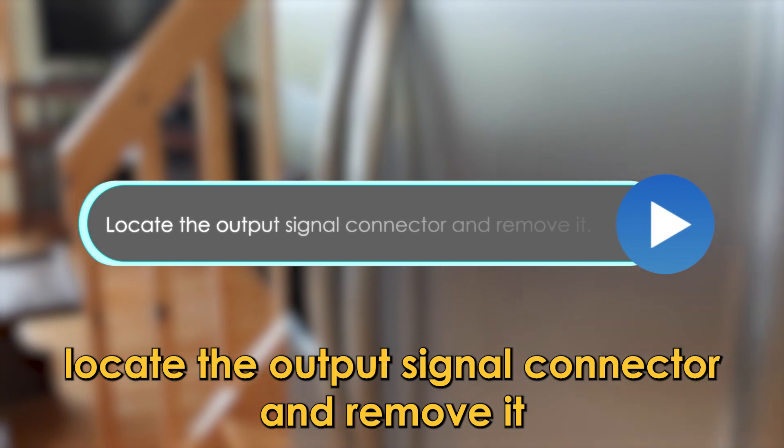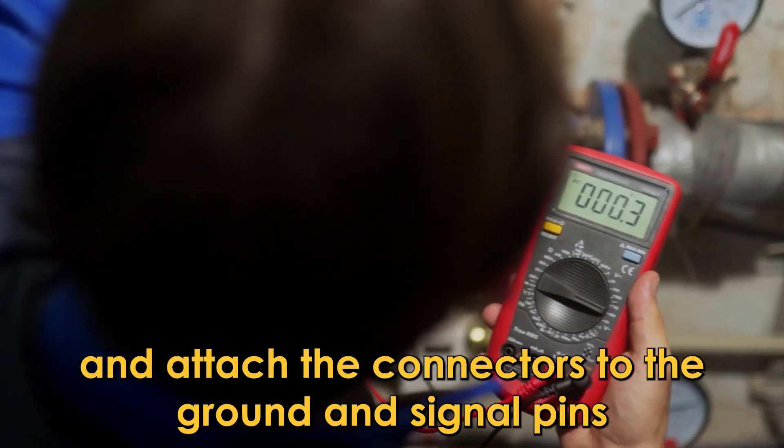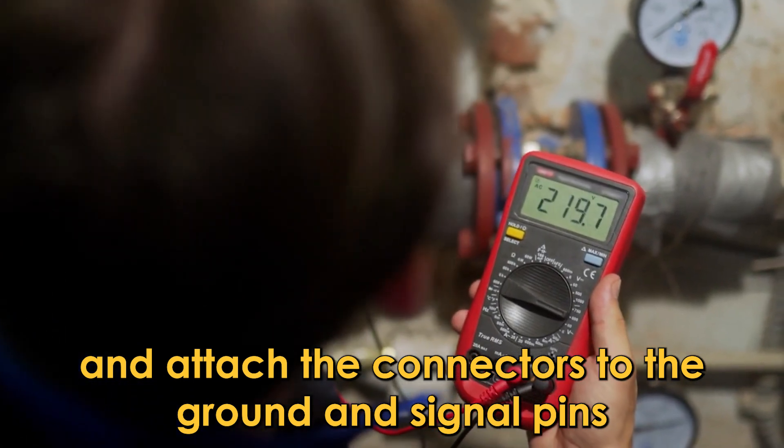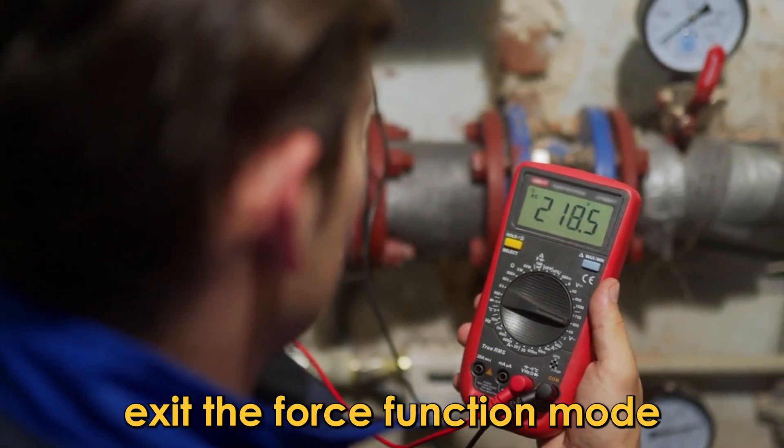Locate the output signal connector and remove it. Set your multimeter to DC and attach the connectors to the ground and signal pins. If you don't get a voltage reading, replace the control board. Exit the forced function mode.